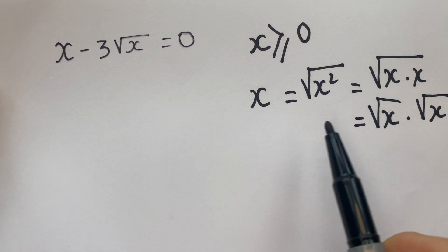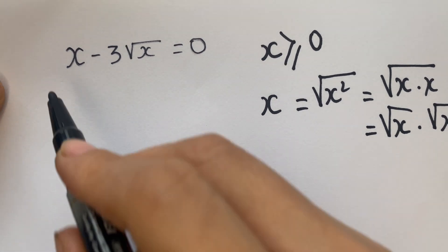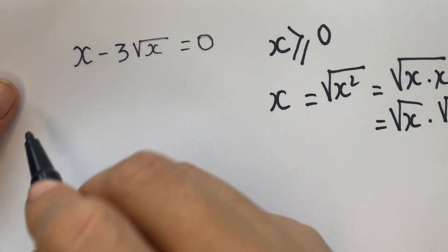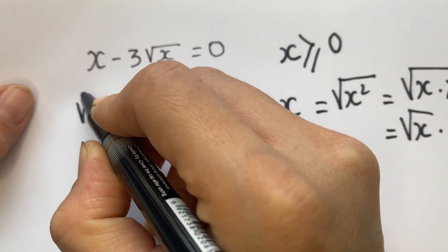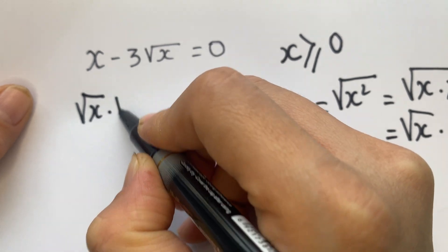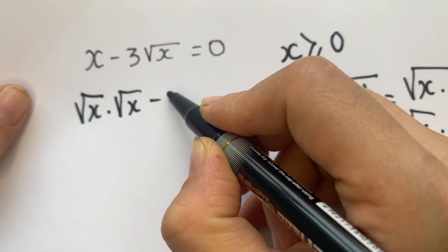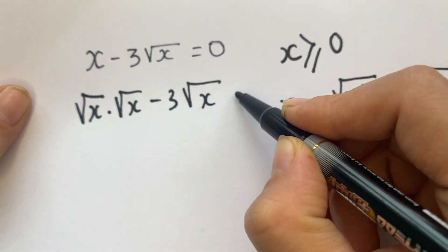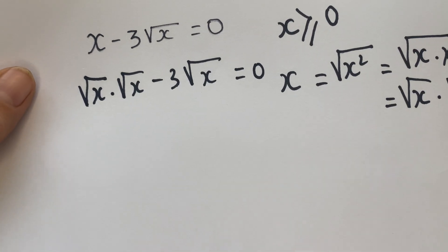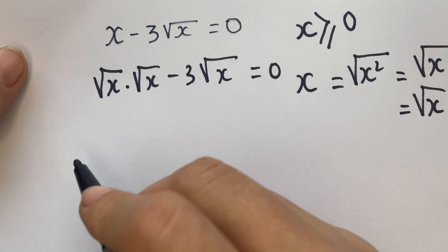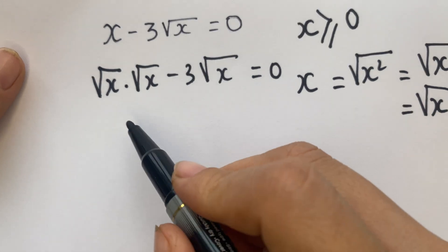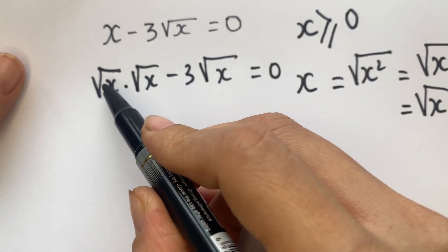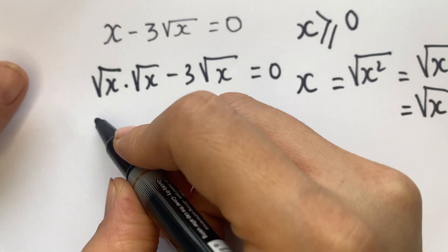So therefore, we need to replace x with this expression in our equation. We have square root of x times square root of x, minus 3 times square root of x, equals 0. And everyone can see that square root of x is a common factor.